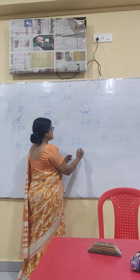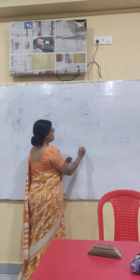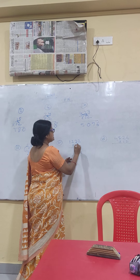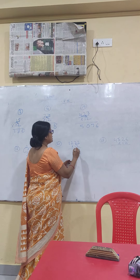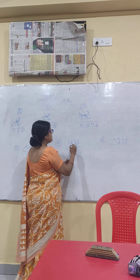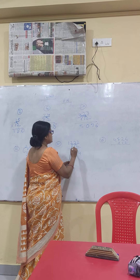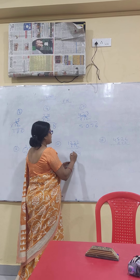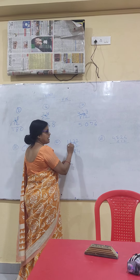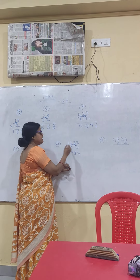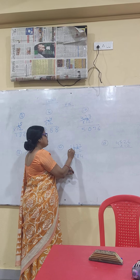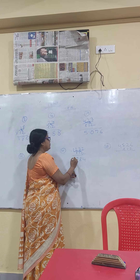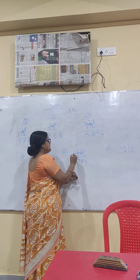2 twos are 4. 2 threes are 6, plus 2 is 8. 2 twos are 4, plus 3 is 7. Now we have 1 number more: 2 ones are 2, plus 2 is 4.